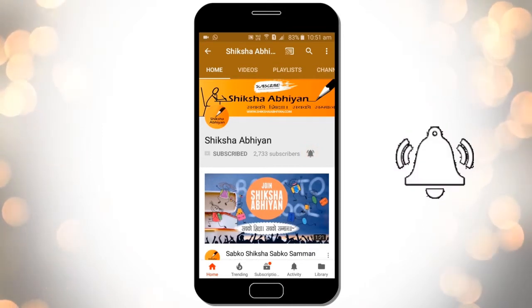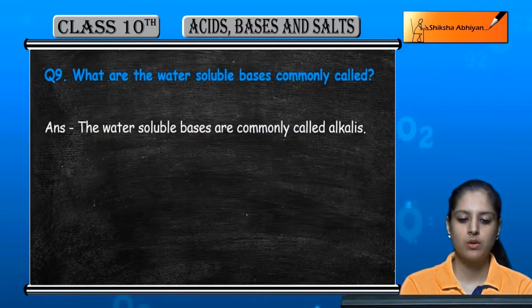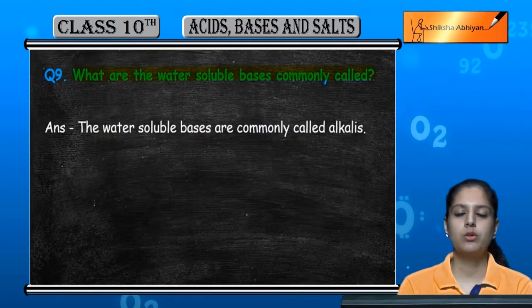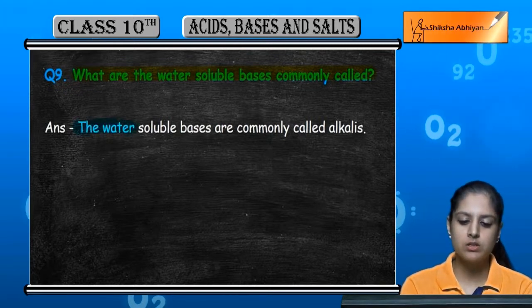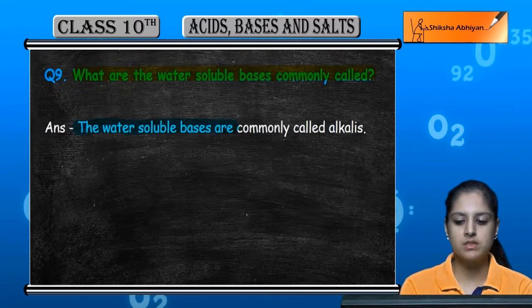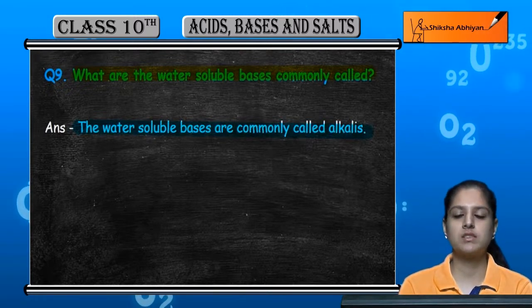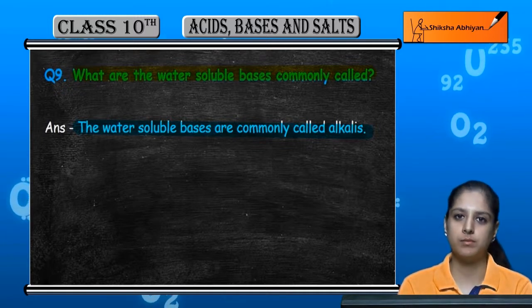Question number nine: what are the water soluble bases commonly called? Un basis ko commonly kya kaha jata hai jo ki water soluble hote hai? The water soluble bases are commonly called alkalis. Agar hama alkalis hote hai, iska matlab ye hai ki woh woh basis hai jo ki water mein soluble hai.